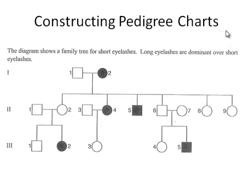In the final part of this presentation we're going to look at how we solve problems using pedigree charts. We have a diagram with the introduction: the diagram shows a family tree for short eyelashes, and long eyelashes are dominant over short eyelashes. Now we can think about assigning genotypes to each of the individuals.